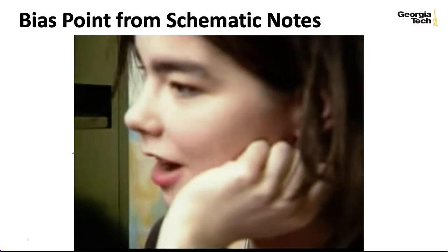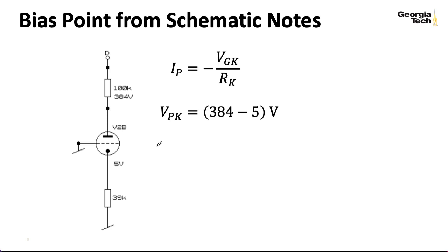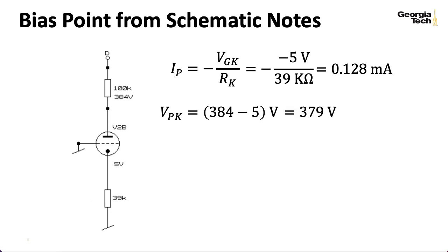So I said, okay, let's try to compute what the bias point would be if we use these values that are on the schematic. Well, one of these I already used. It was that grid to cathode voltage of minus 5 volts. Dividing by 39 kiloohms gives me an operating point of 0.128 milliamps. Now, if I believe what's on the schematic, then the plate to cathode operating voltage is 384 minus 5 volts, giving me 379 volts.